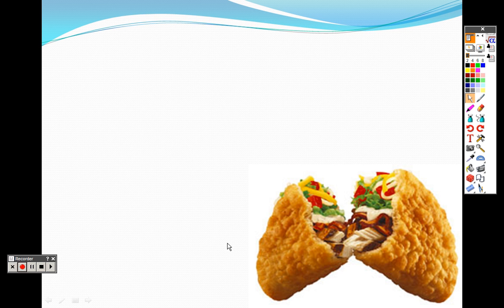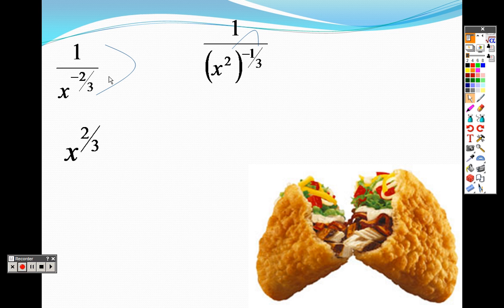Alright, so another example here. We want to take that negative one-third through to the two, so we end up getting one over x to the two-thirds. But it's a negative on the bottom, so when there's a negative on the bottom we can actually flip that up to the top. So I get x to the two-thirds, but to rewrite that with a root, remember whatever is on the bottom, that is your root, so it's the cube root of x squared as your answer.